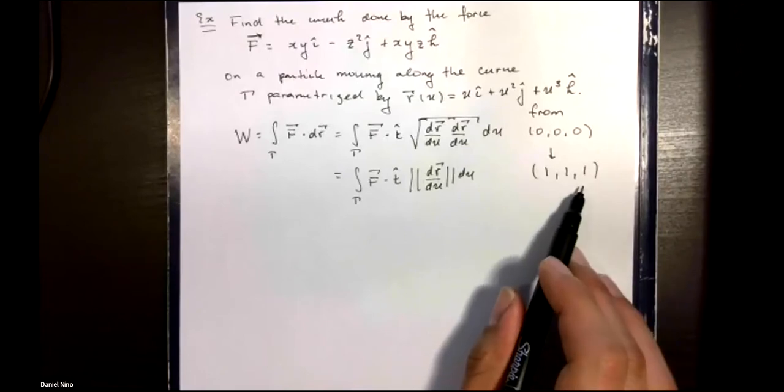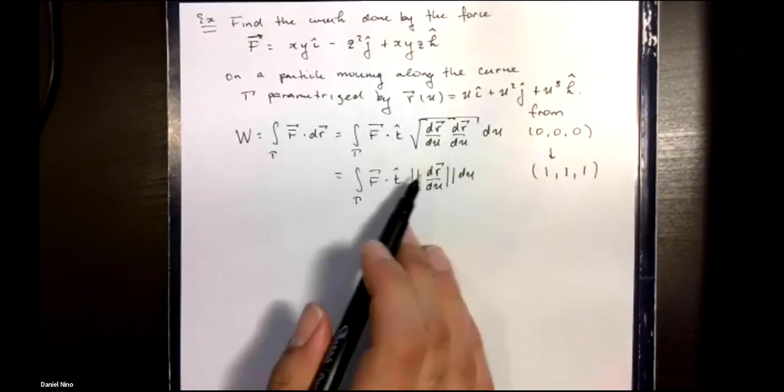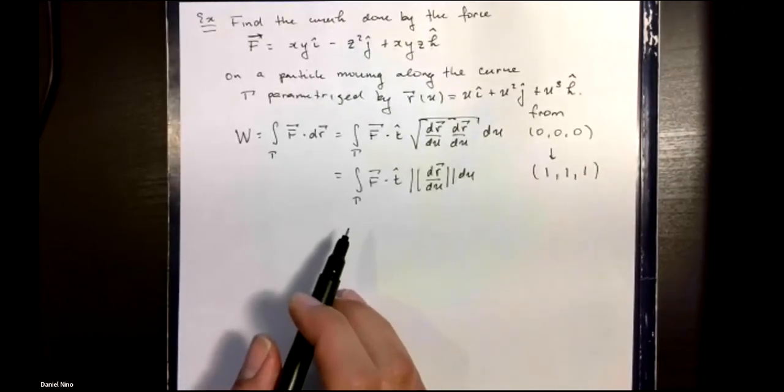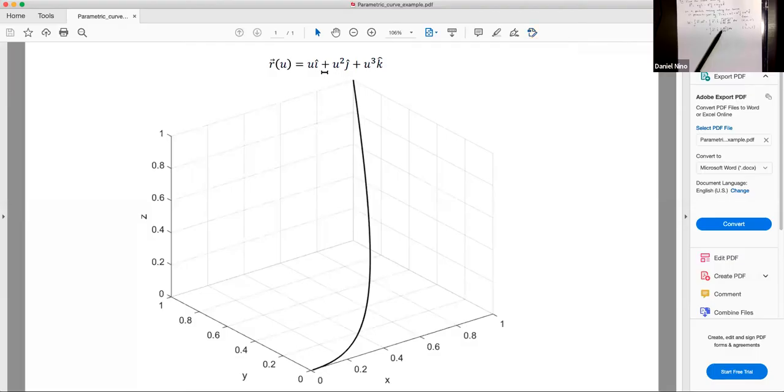Before we get into the details of how to calculate it, I wanted to show you what this curve looks like. The curve parametrized by this equation looks something like this where you see it curves around towards x and then eventually starts moving up to z is equal to one when y and x are also equal to one. This gives you an example of what kind of curves you can represent with this parametric representation.